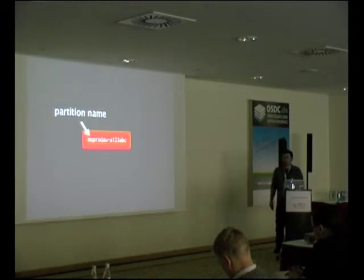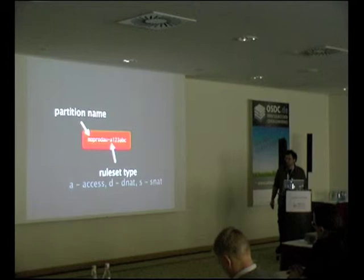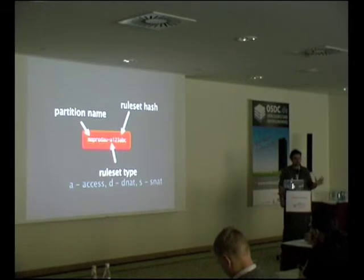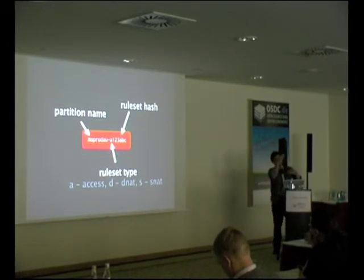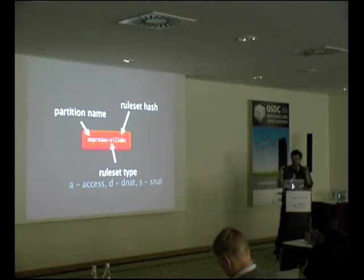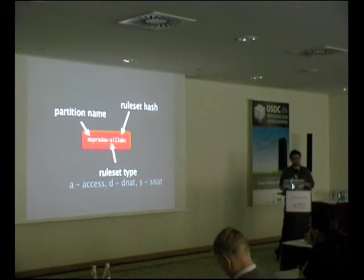Information encoded into the chain names includes the partition name, the rule set type — access, DNAT, or SNAT encoded as A, D, or S — and then a hash. That hash is calculated by interpreting the DSL, generating all the rules, and taking an MD5 checksum. That hash is shoved into the partition name.